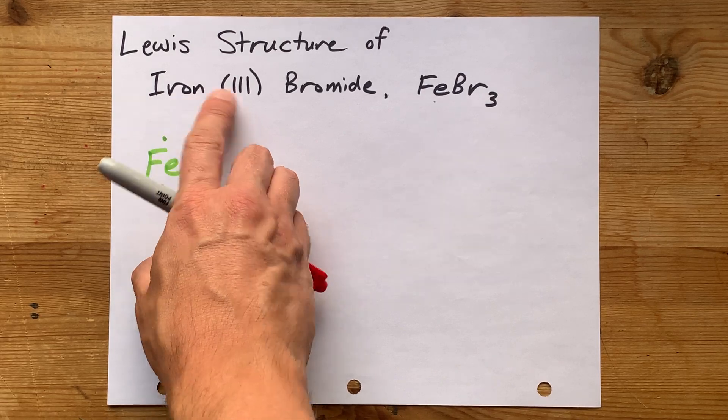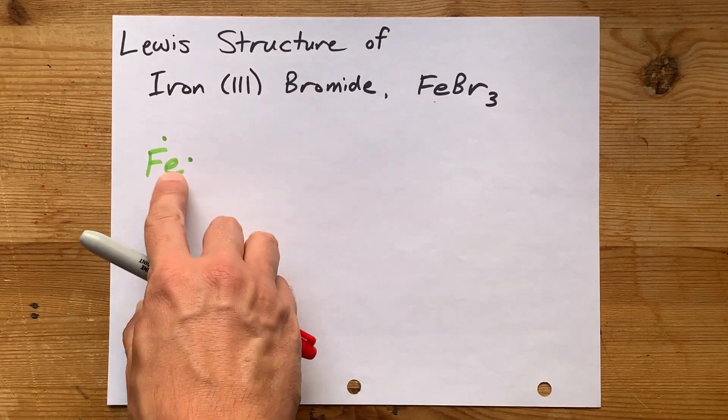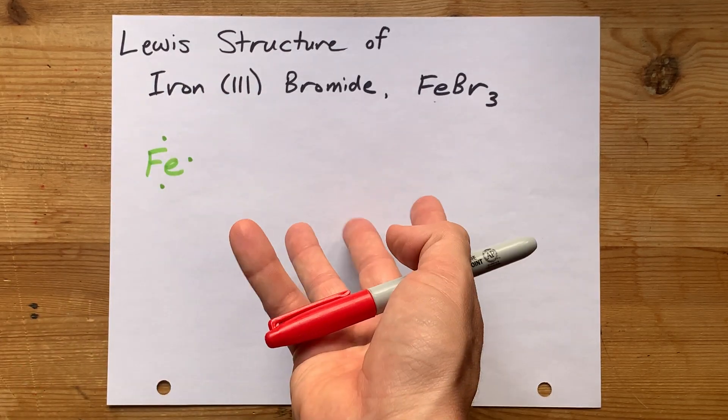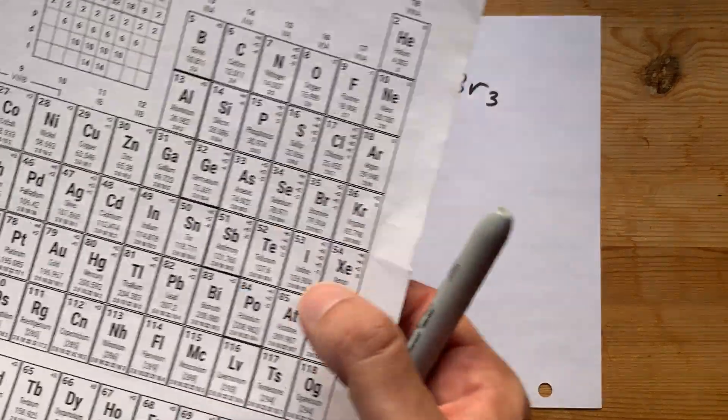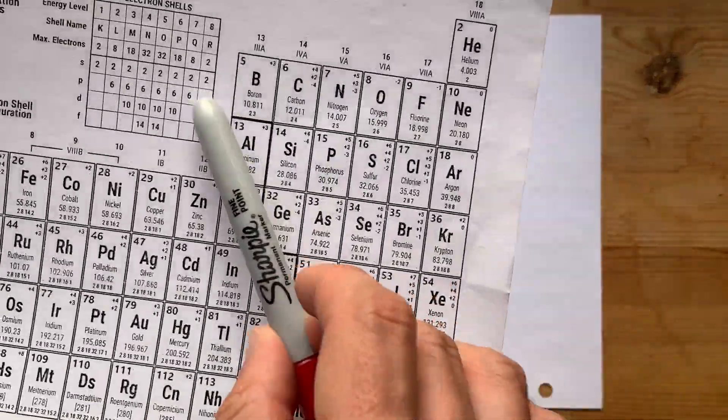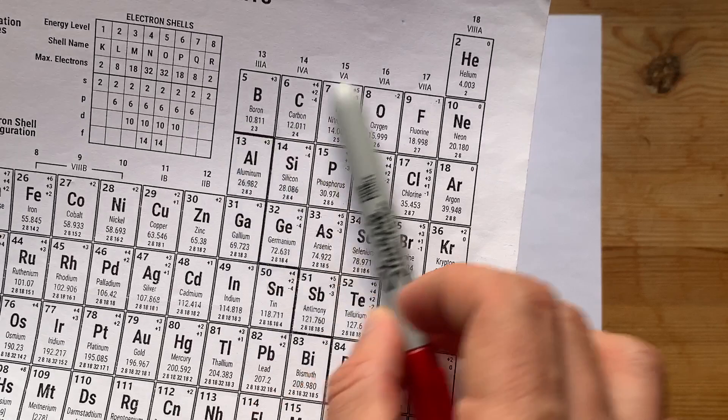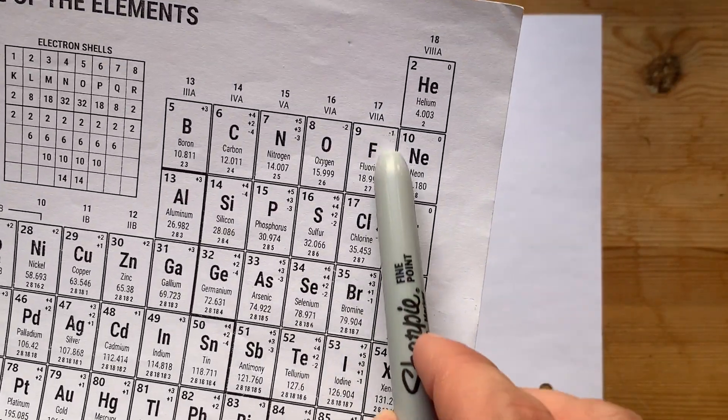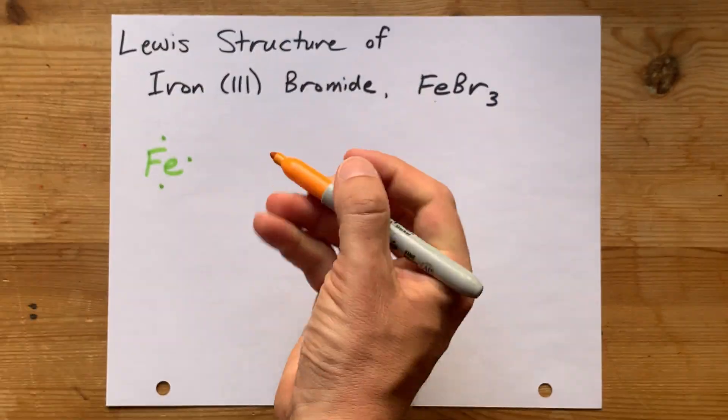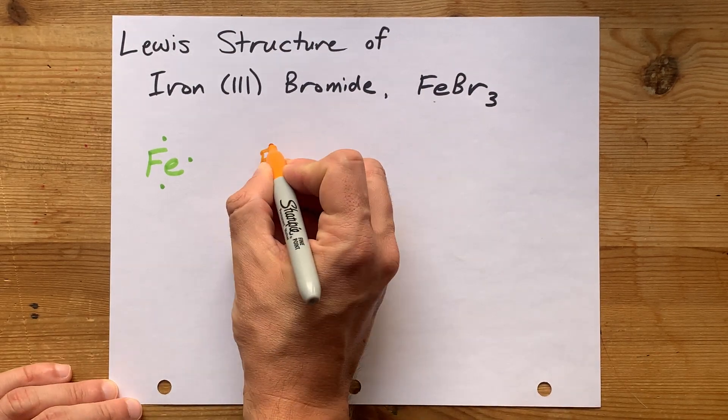If your formula says iron(II) bromide, only give it 2 valence electrons. Get it? Now, bromine, on the other hand, is a non-metal from the right-hand side of the periodic table. In group 17, it's going to bring 7 valence electrons with it.